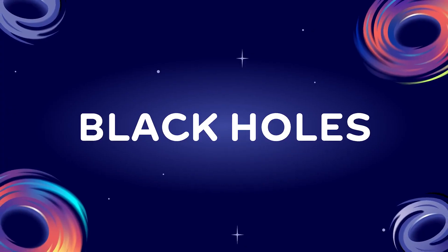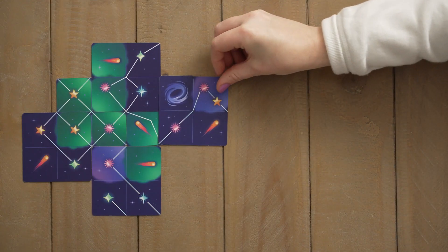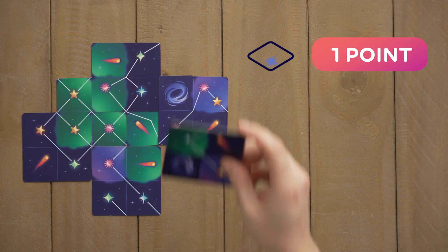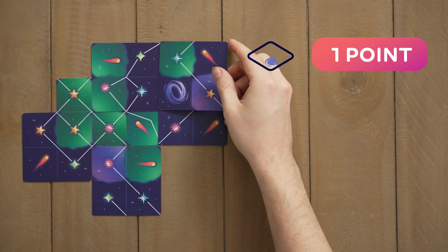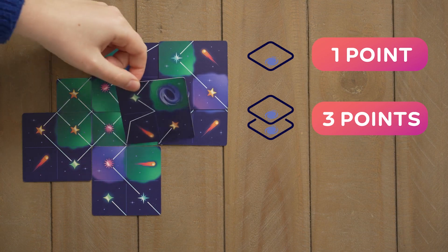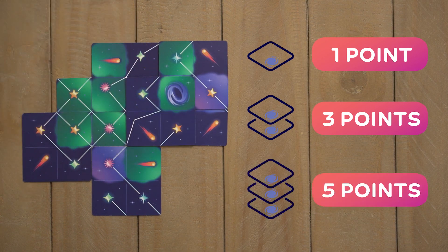Black holes. You score points by stacking black holes. Placing a black hole scores one point. Placing another on top scores three points. And placing a third one on top of that scores five points.